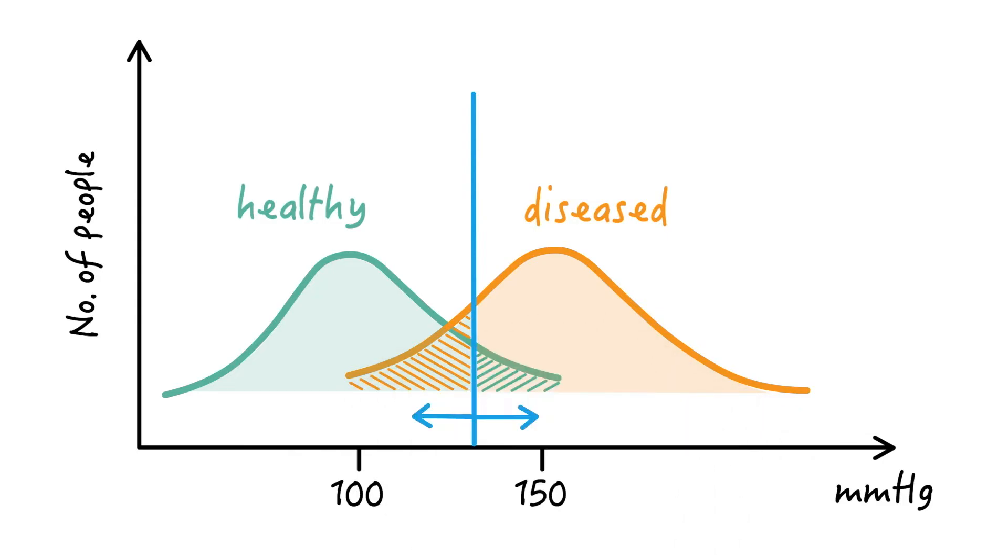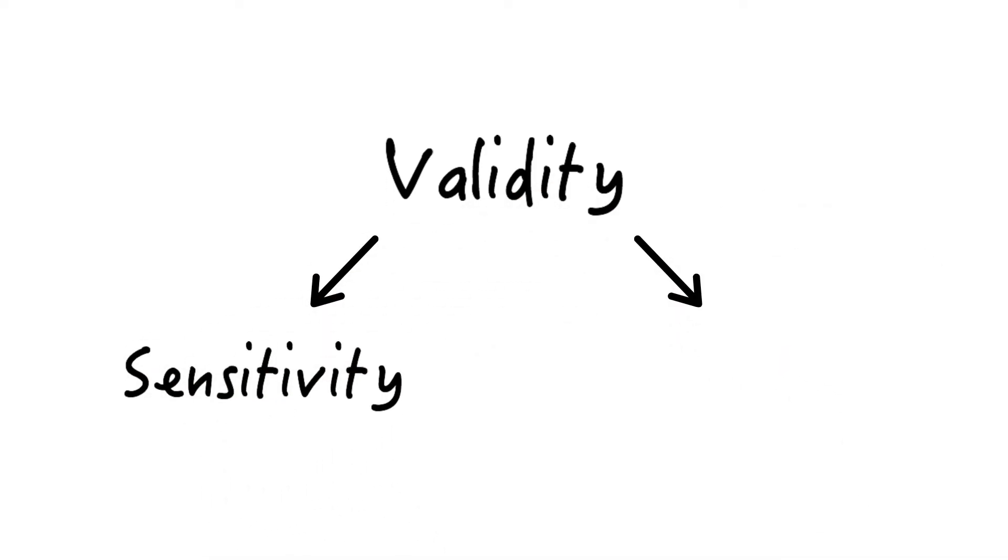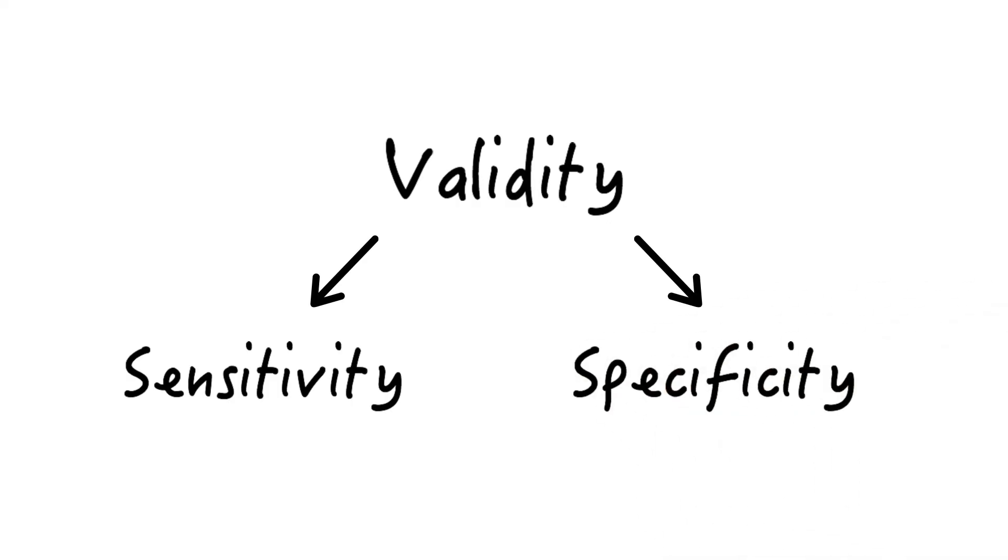If a test is able to classify a large proportion of diseased and non-diseased correctly, it is said to have a high validity. Test validity has two major components. One is sensitivity and the other one is specificity. These are quality criteria for the test.